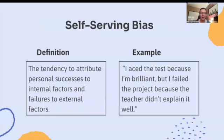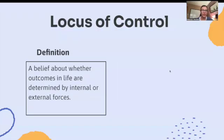Self-serving bias is the tendency to attribute personal successes to internal factors and failures to external factors. For example: I aced the test because I'm brilliant, but I failed the project because the teacher didn't explain it very well.